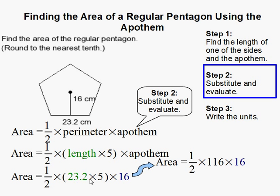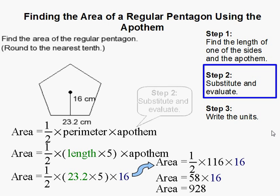Then we multiply 23.2 times 5, and we get 116. Then I just did a half times 116 here, and then multiply this, and you get 928.